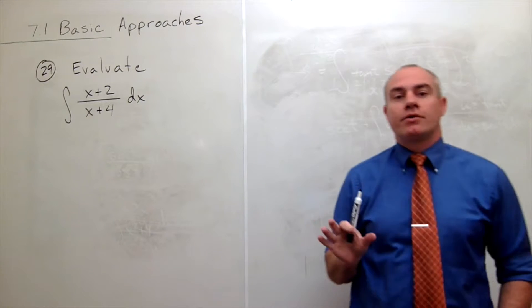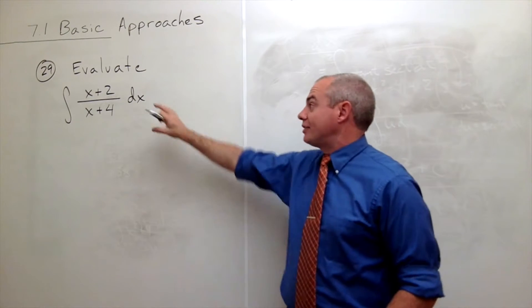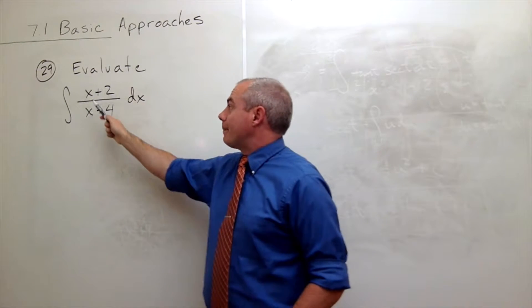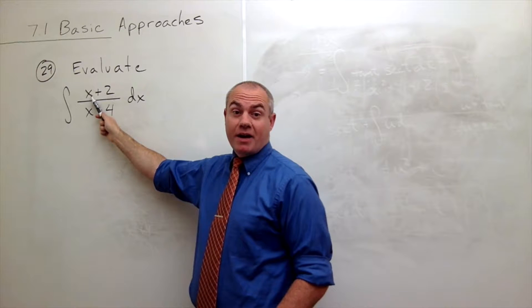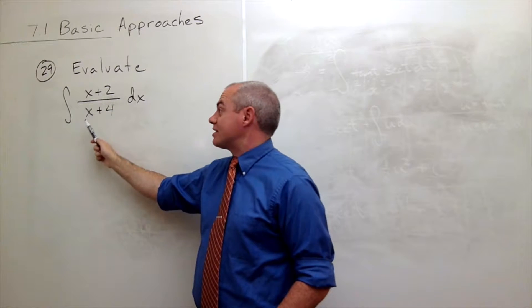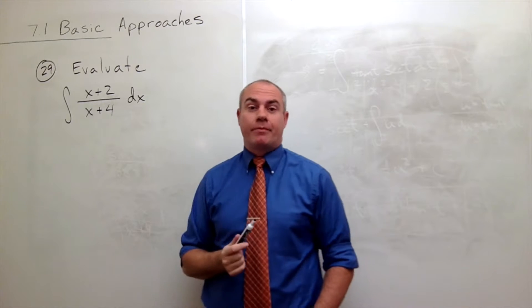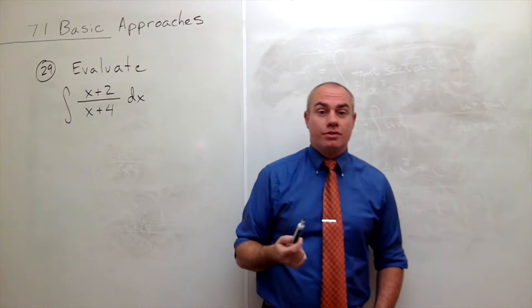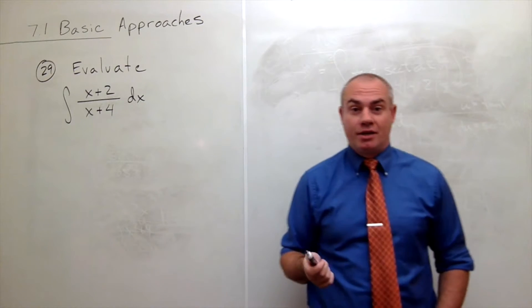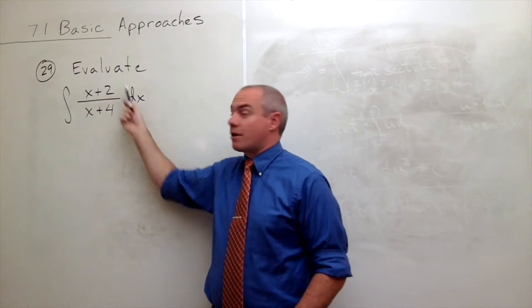And the very first thing I notice here is that this is a rational function, and the power of x, the highest power of x on the top, is the same as the highest power of x on the bottom. And that means that we could use polynomial division to simplify this expression down.